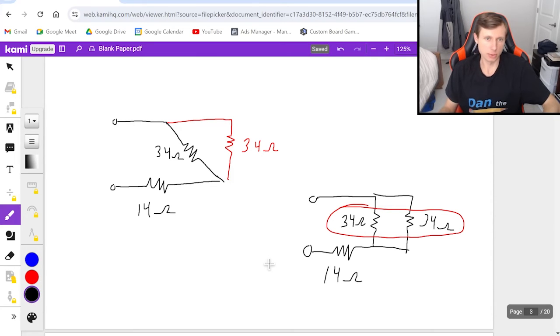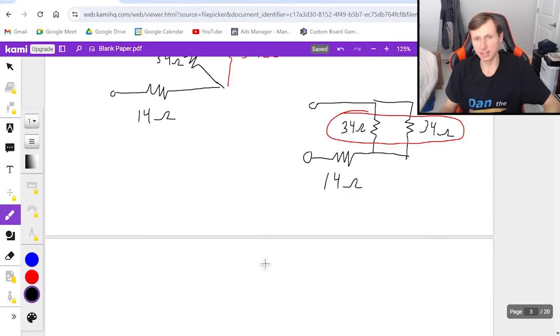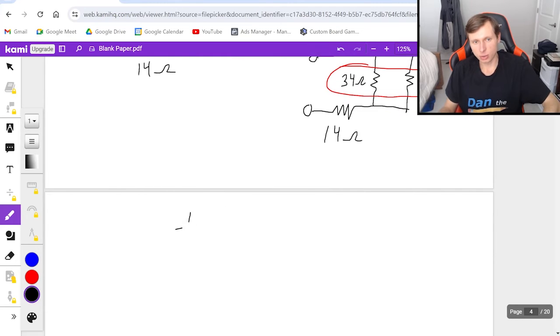And no, it did not matter that it was on a diagonal, did not matter at all. So to add these up, it's 1 over 34 plus 1 over 34, raise this to the negative first power, and you'll get 17 ohms for that one.